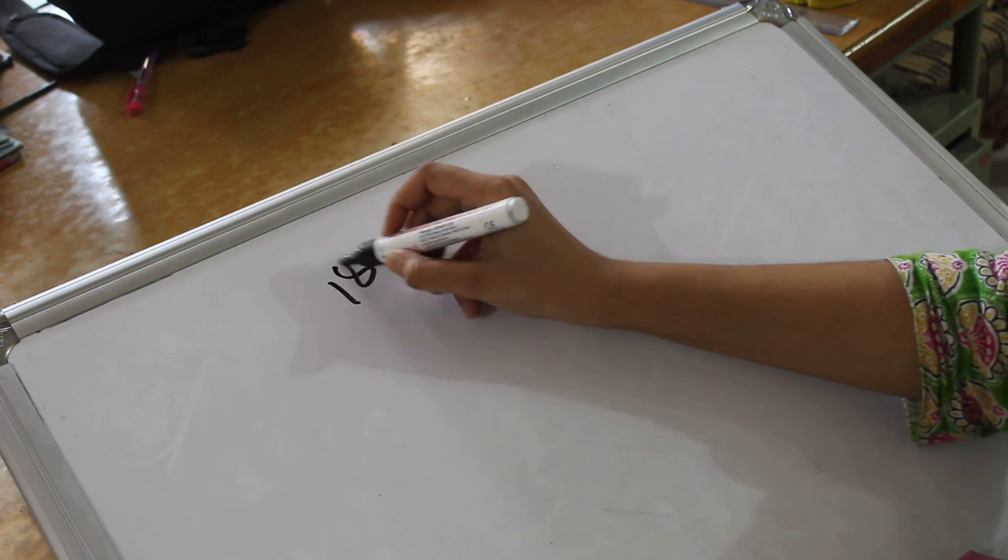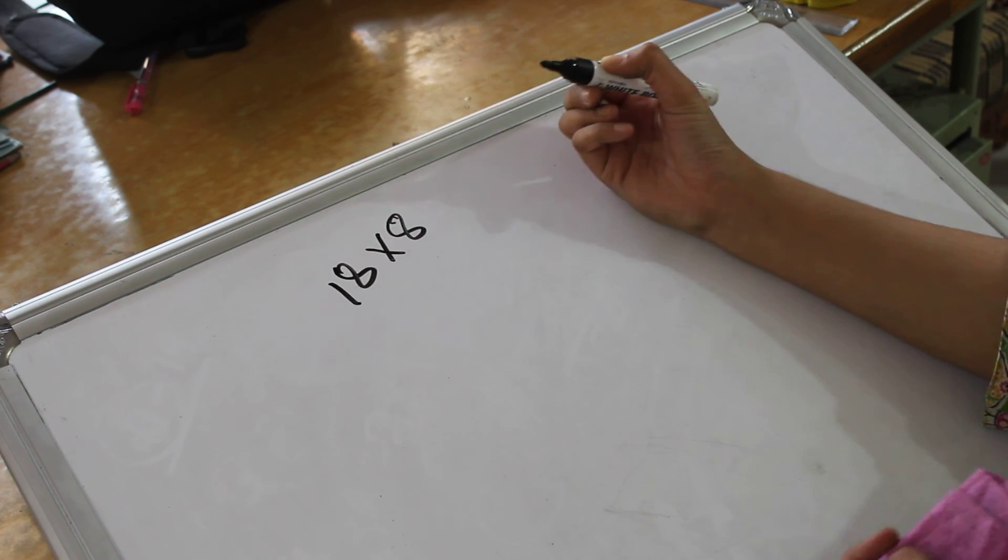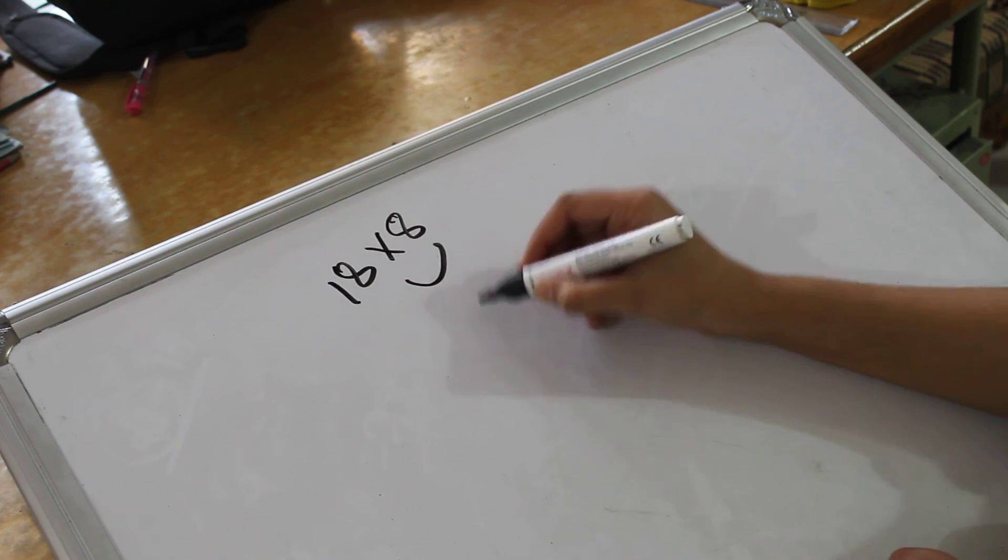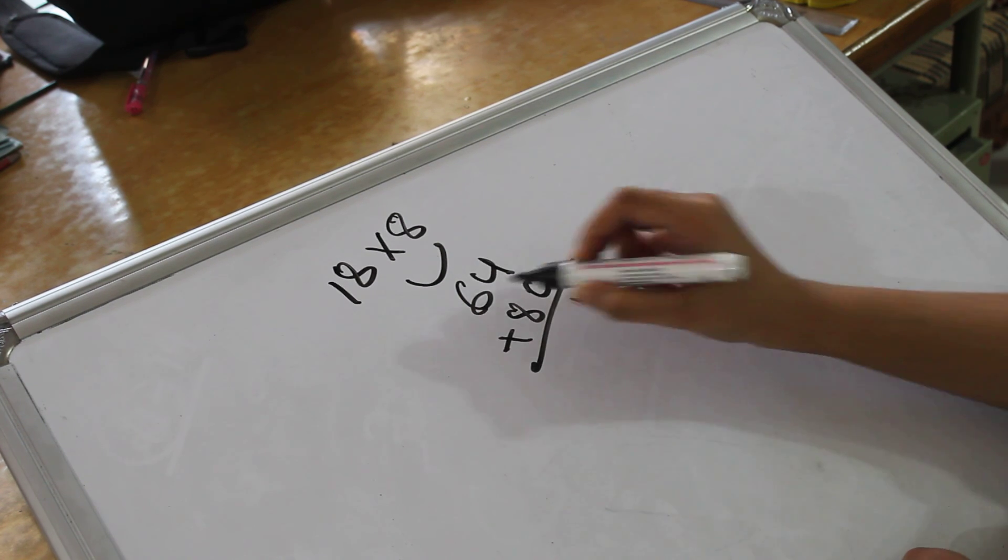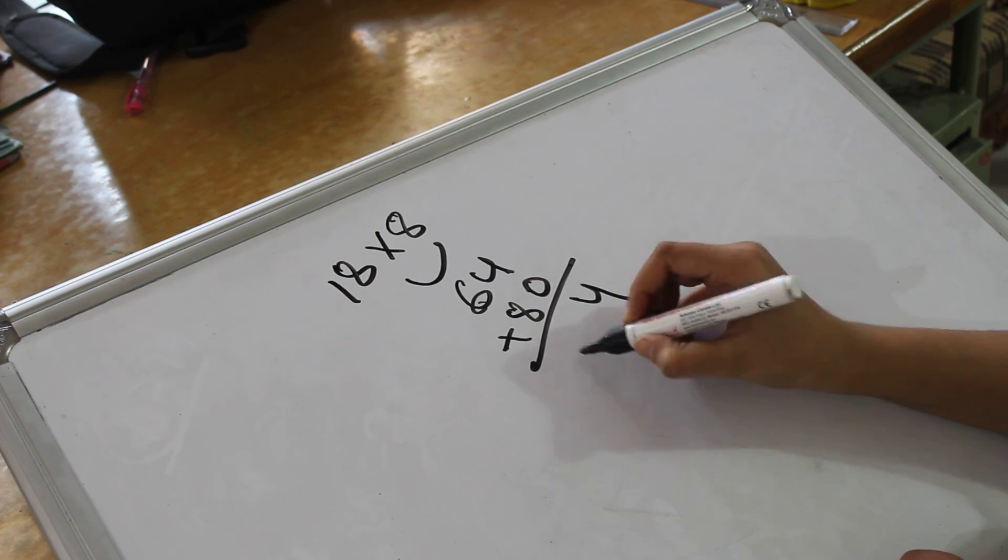Now 18 table. 18 into 8, which seems good. So 8 into 8 is 64. Plus 80. That would be 4. How much is this? That would be 144.